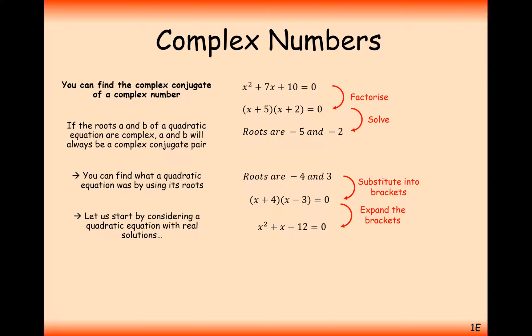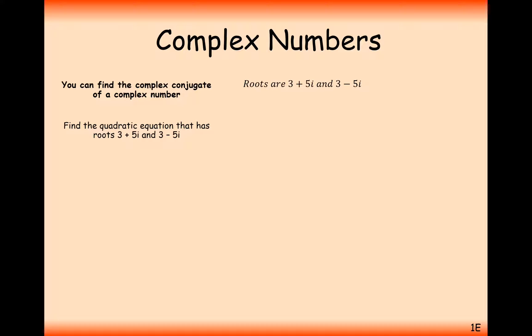When we're asked to find the quadratic equation where we've got two roots, all we have to do is set up a couple of brackets where it's x minus the first root times by x minus the second root. So let's go ahead and do that in this question. So x minus the first root and x minus the second root. Be careful here to put the root in brackets because it's actually subtracting both of the parts, the real and imaginary parts.